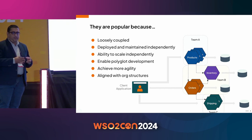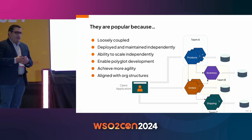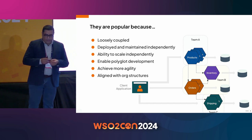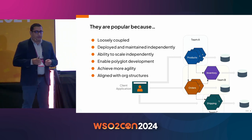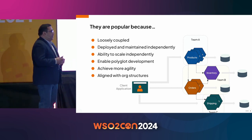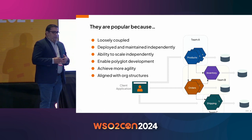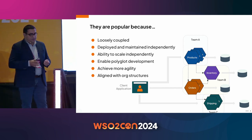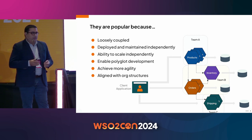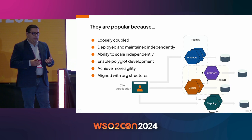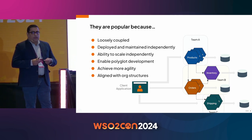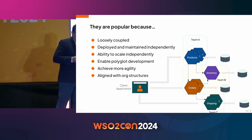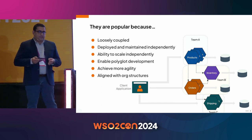You're free to choose any technology for the different services, which allows you to pick the right technology for the right job — that's what I mean by enabling polyglot development. And because these are independent and loosely coupled, that gives you a lot more agility when it comes to doing releases and maintenance. Each microservice can be handled by different teams who can do independent releases as long as they maintain the contracts between the services.